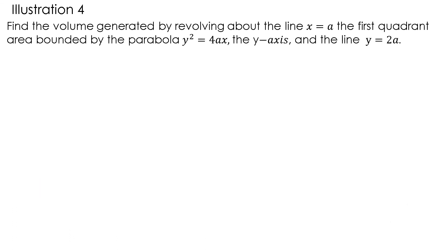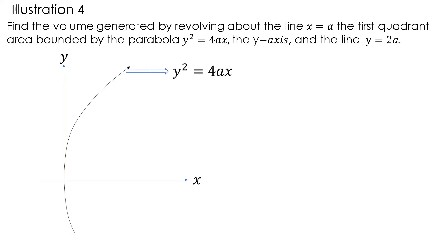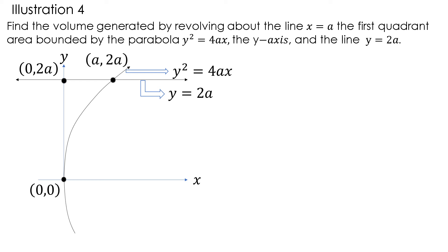Find the volume generated by revolving about the line x = a the first quadrant area bounded by the parabola y² = 4ax, the y-axis, and the line y = 2a. Sketching, we get the parabola y² = 4ax, the line y = 2a, and the points of intersection at (0,0), (0, 2a), and at (a, 2a).